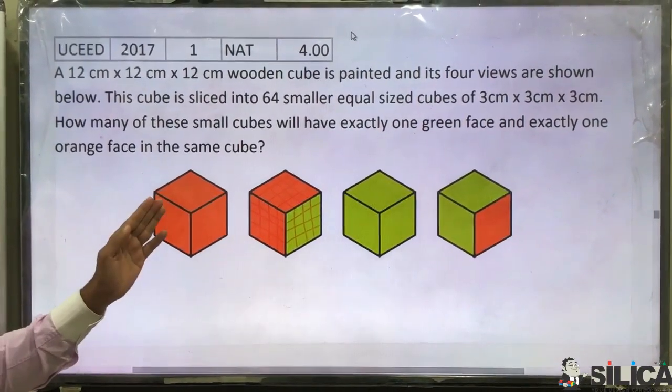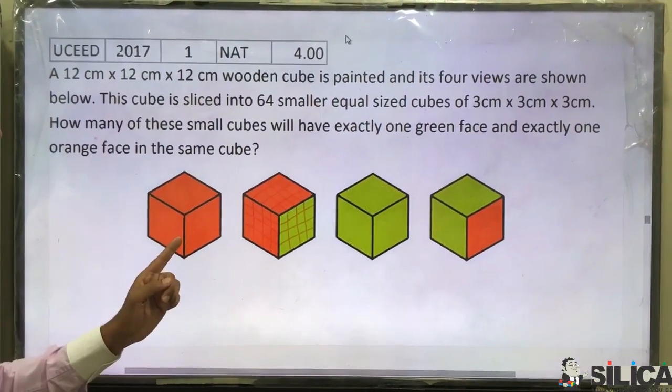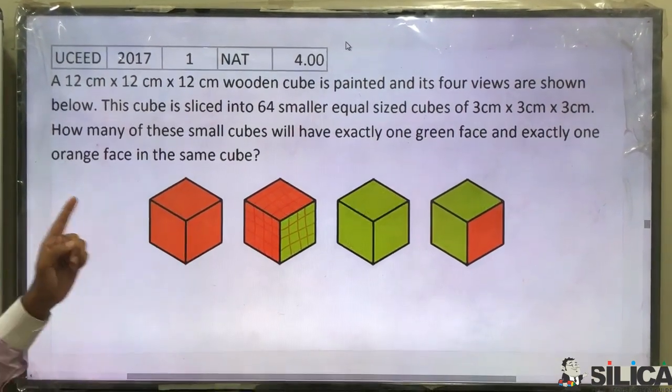How many of these small cubes will have exactly one green face and exactly one orange face in the same cube?